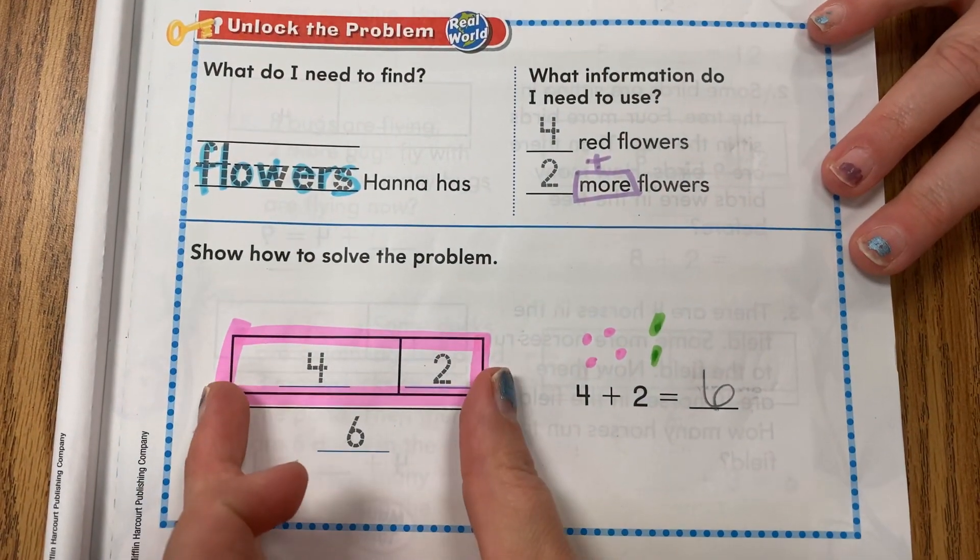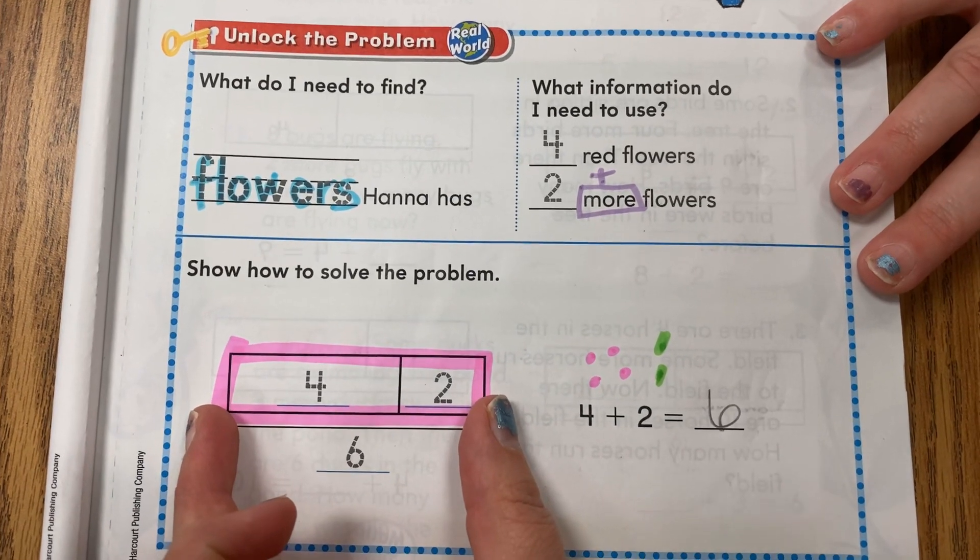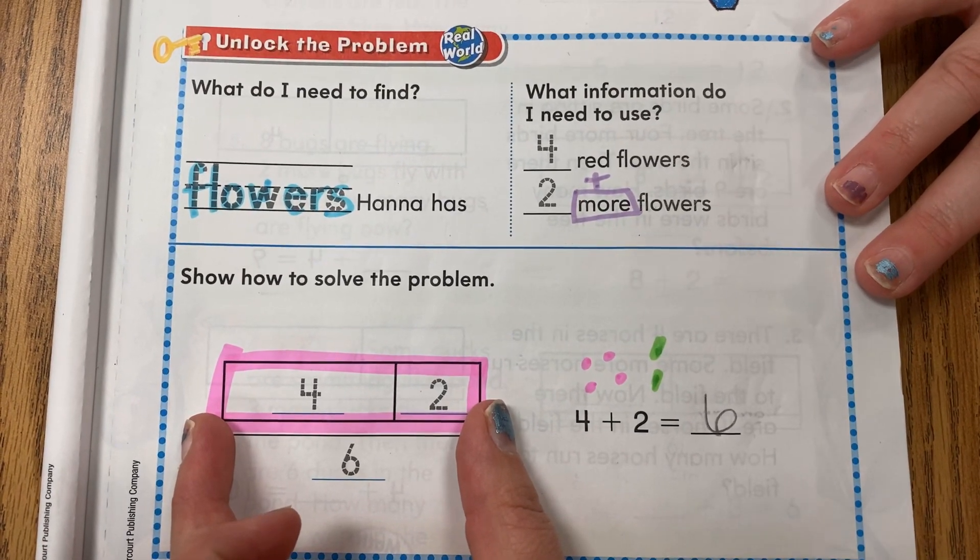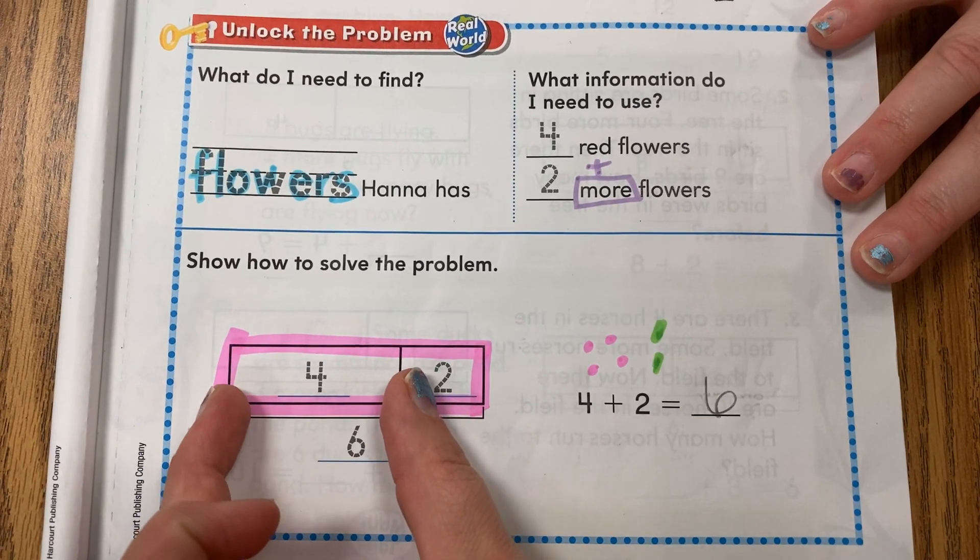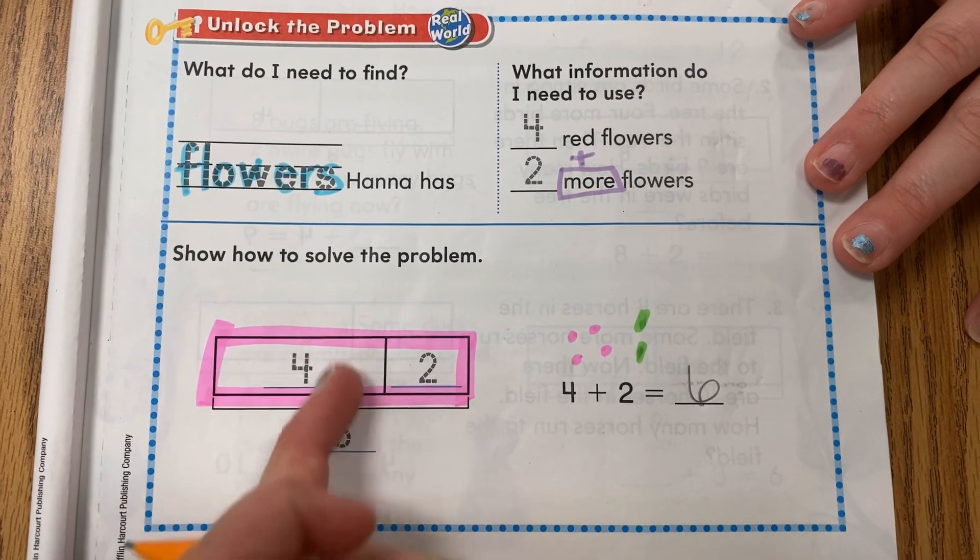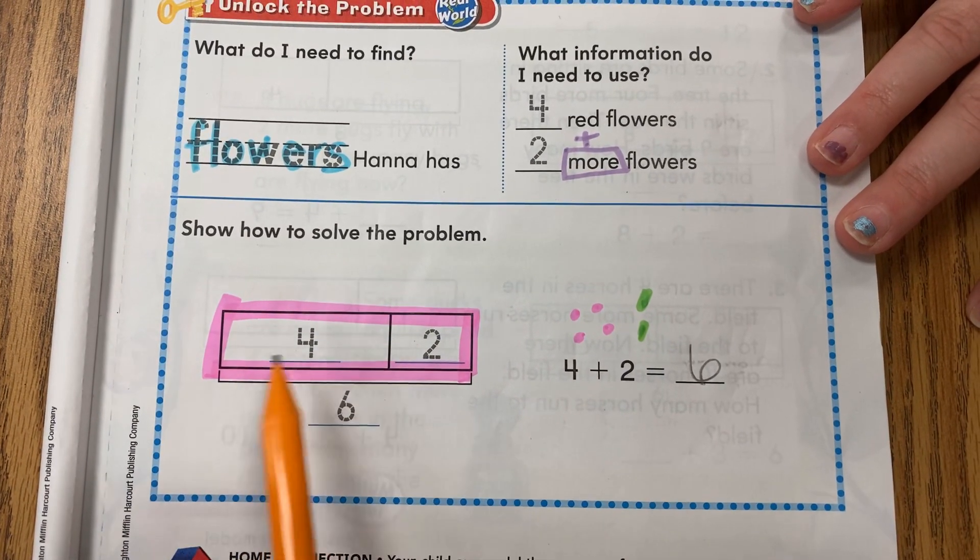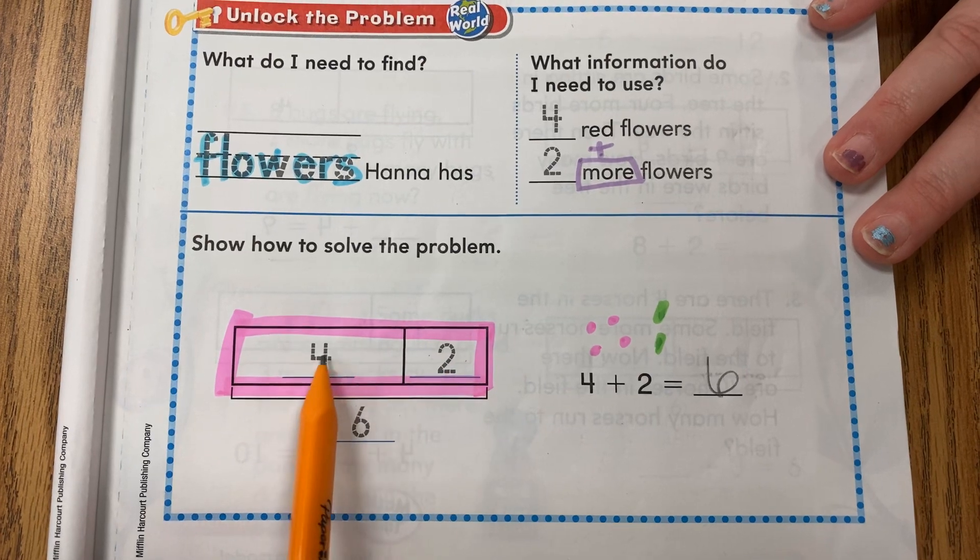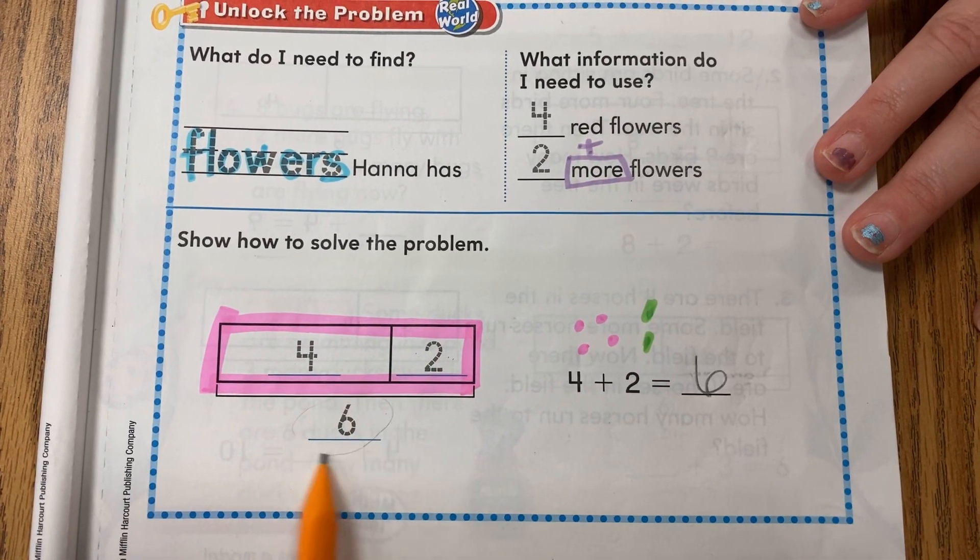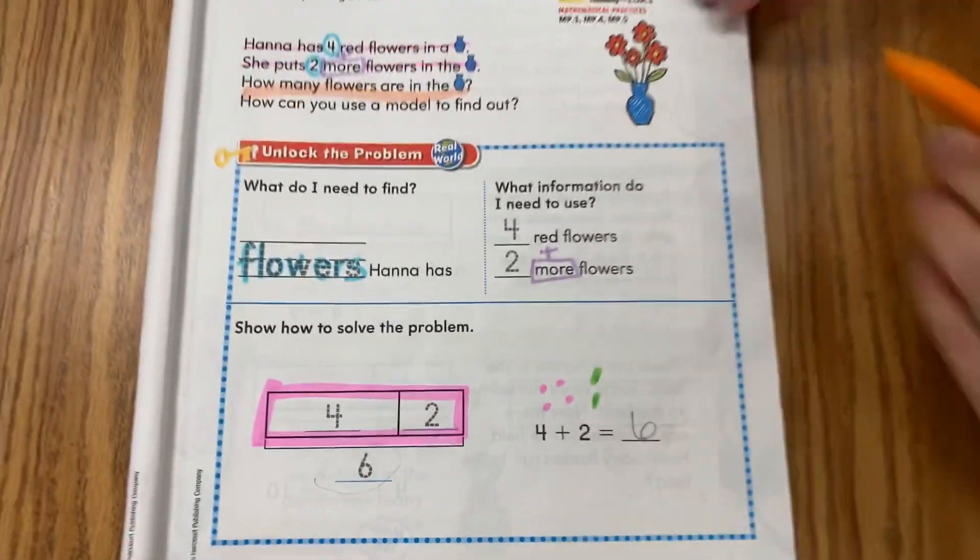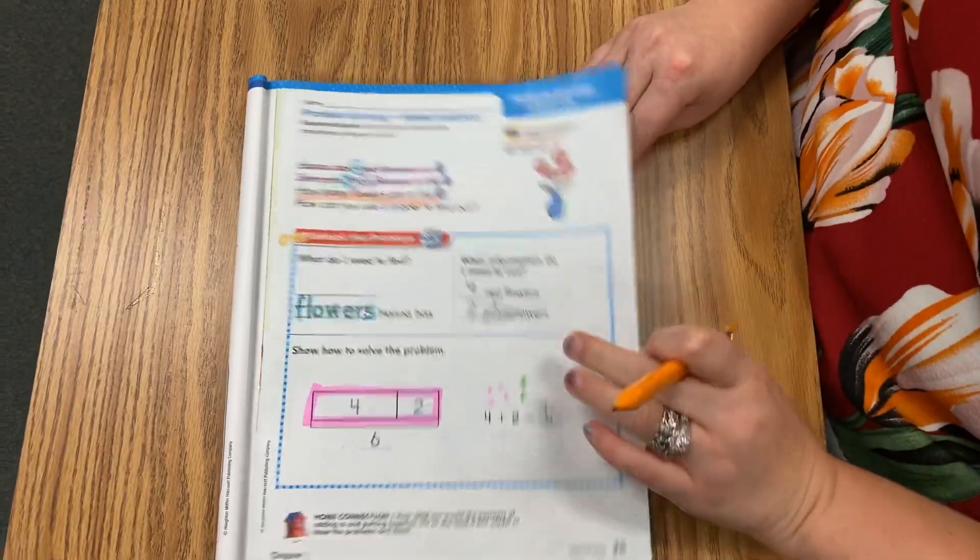We're going to take that over here to a bar model. Here they've already done it for you and showed you. This bar means my whole number of six. If I cut it into six pieces, they would all be the same size. Four is a bigger piece, so I cut it and give four the larger box and then two in the smaller box. It actually makes the equation: four plus two is the same as six.